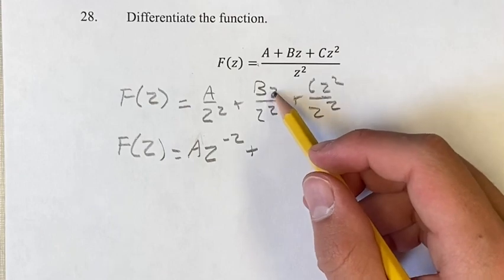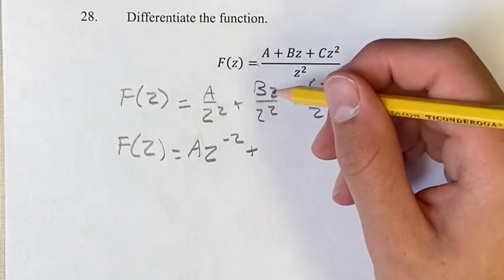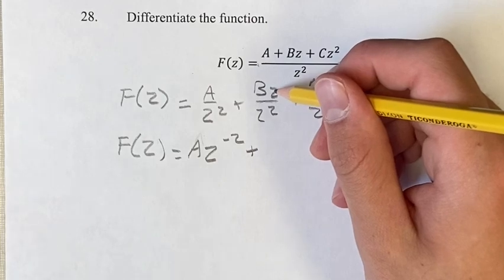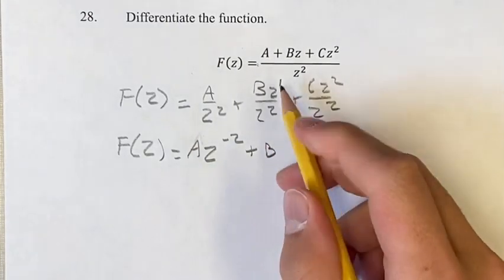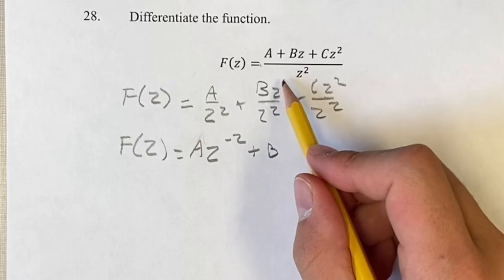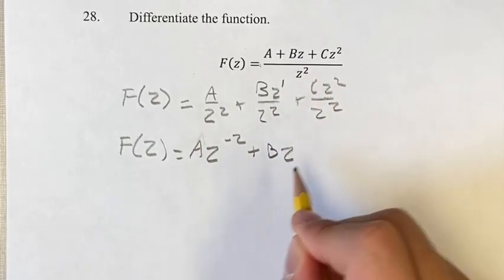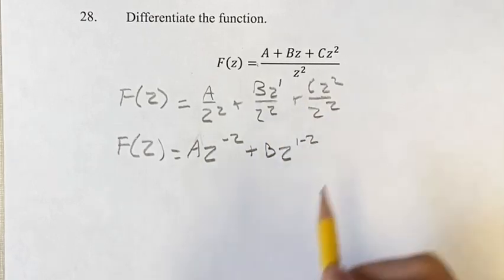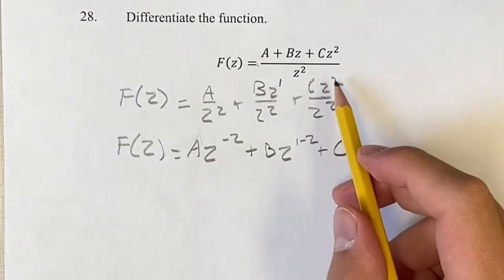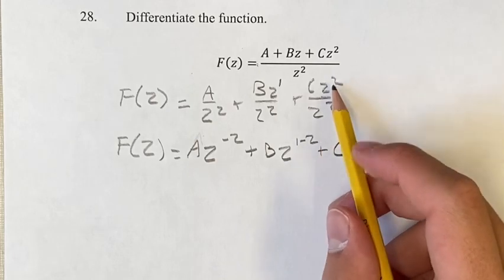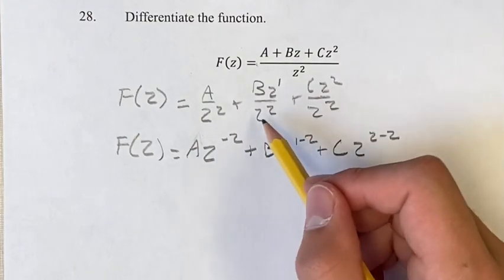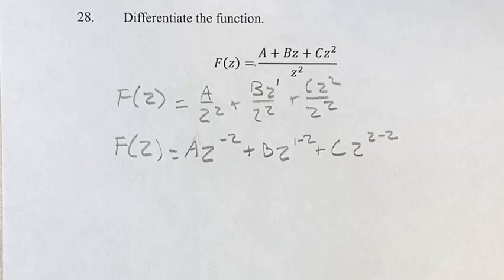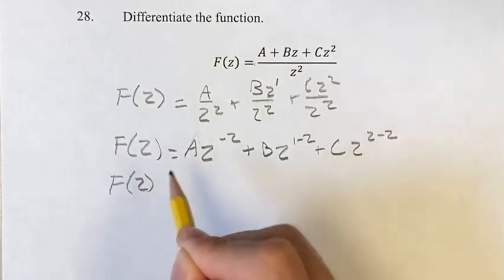We can't do that for the bz term because we have z in both the numerator and the denominator. So instead, we use the quotient rule approach — think of it as b times z to the 1, and since we're dividing, we subtract the exponents. So this is b times z to the 1 minus 2. Same thing for c: z to the 2 minus 2. This saves one step and is a little easier to think about.